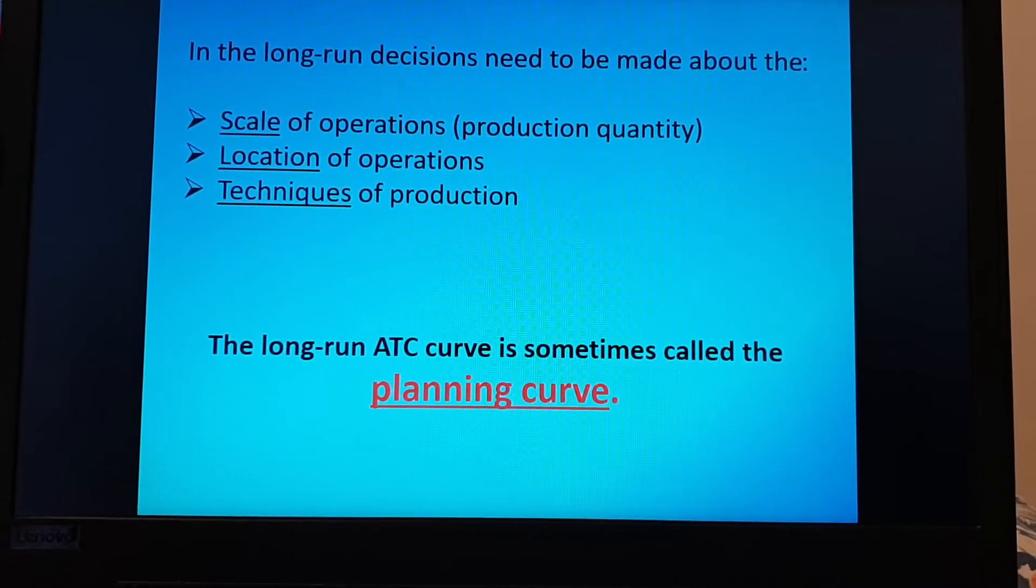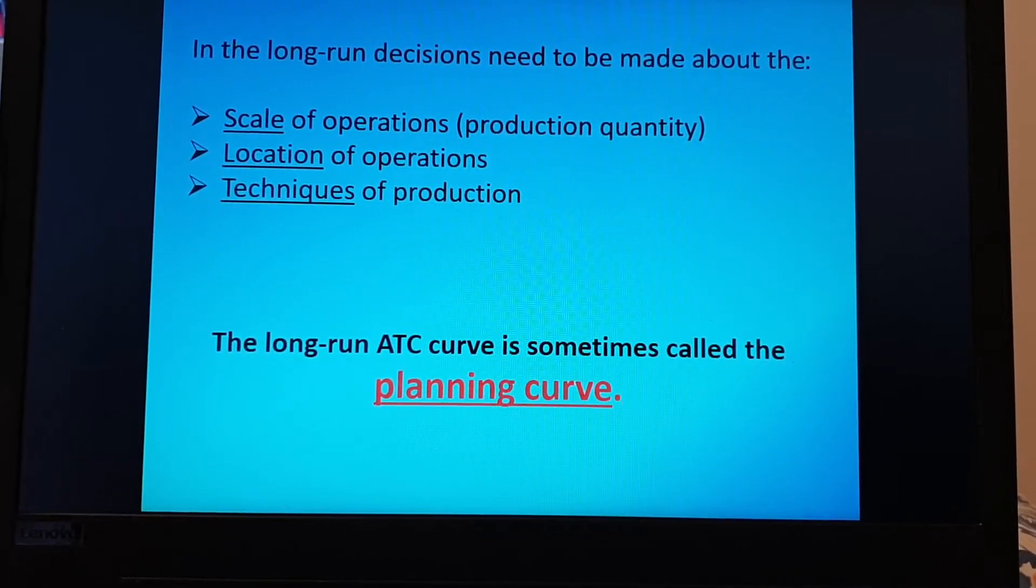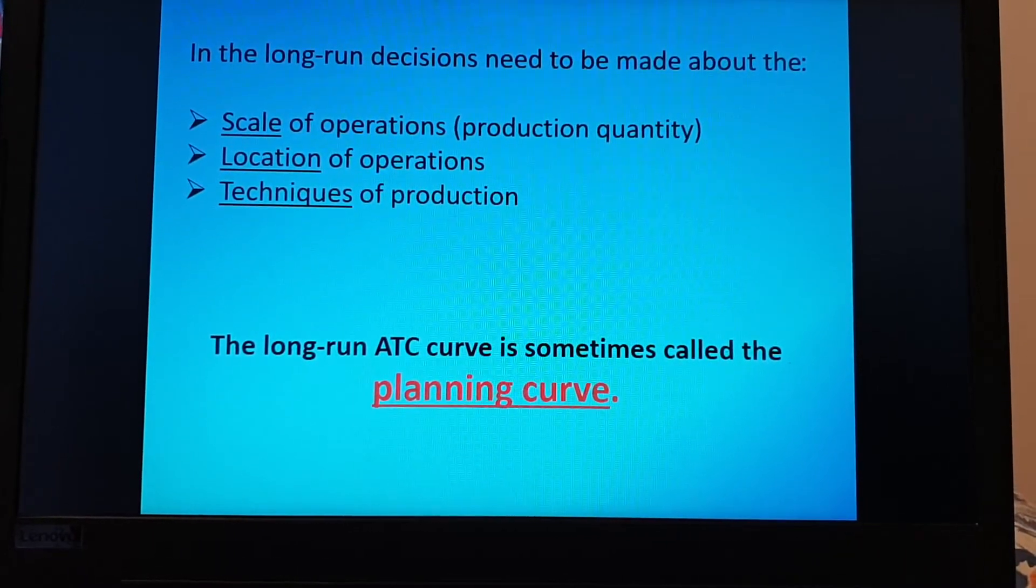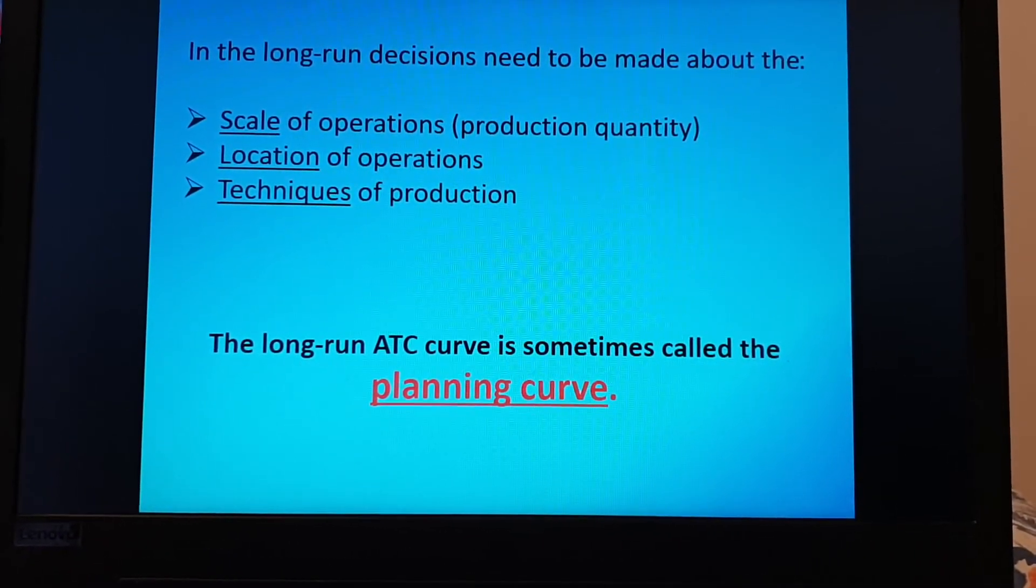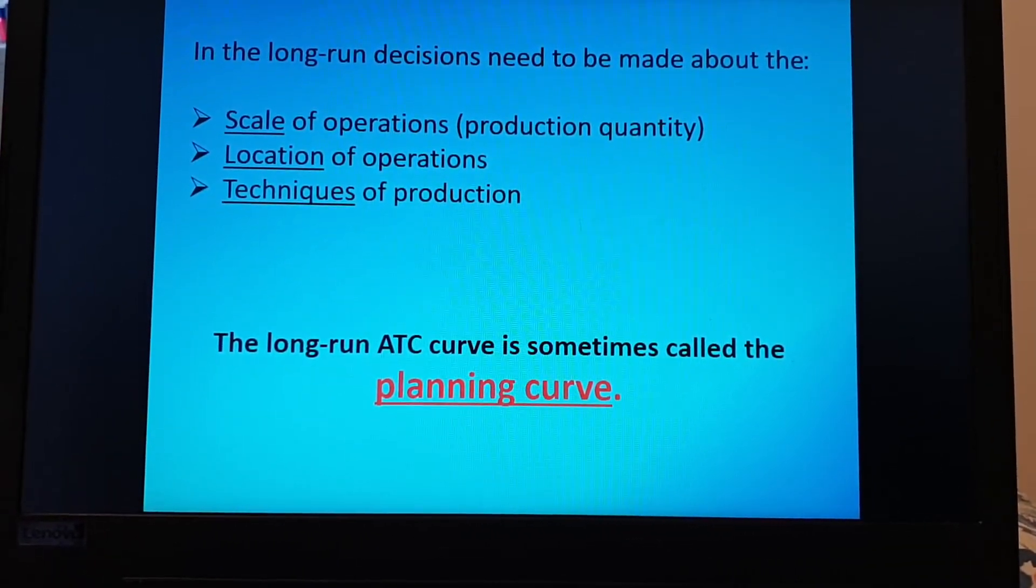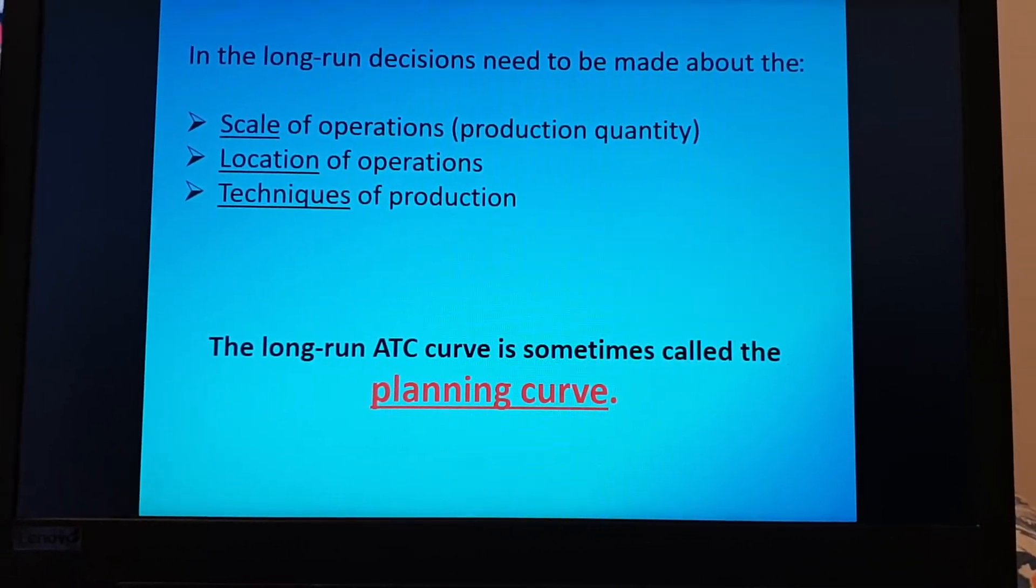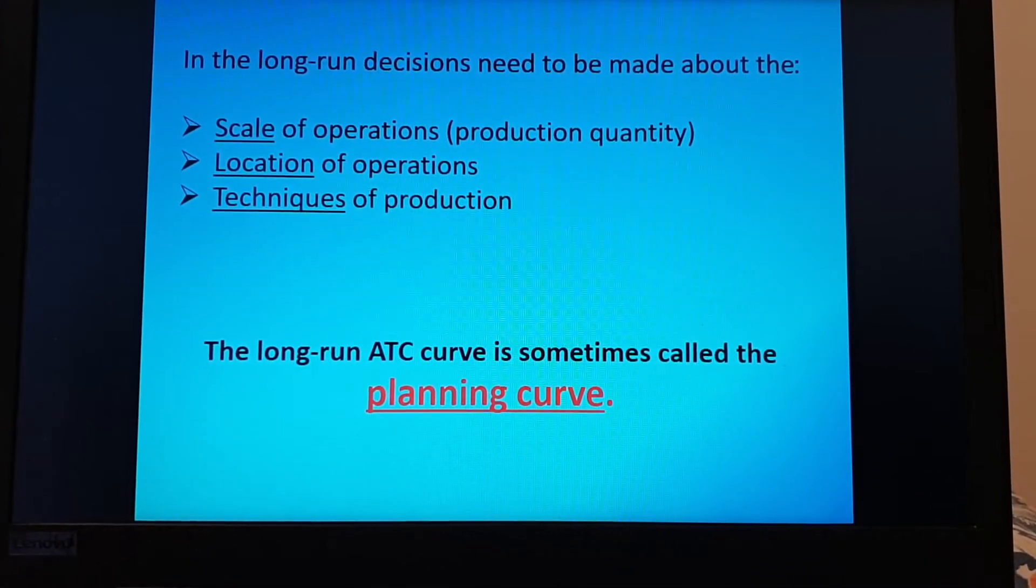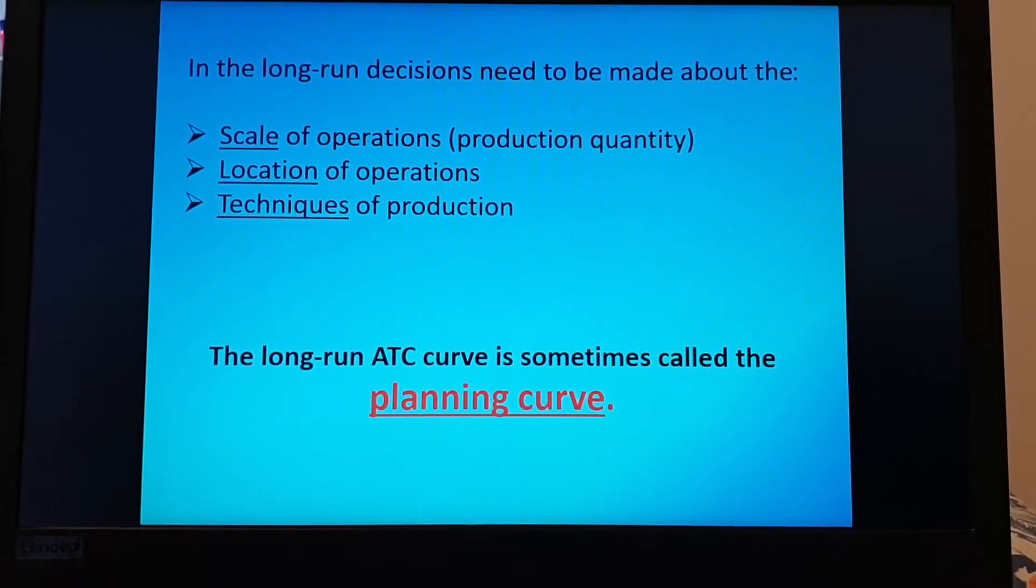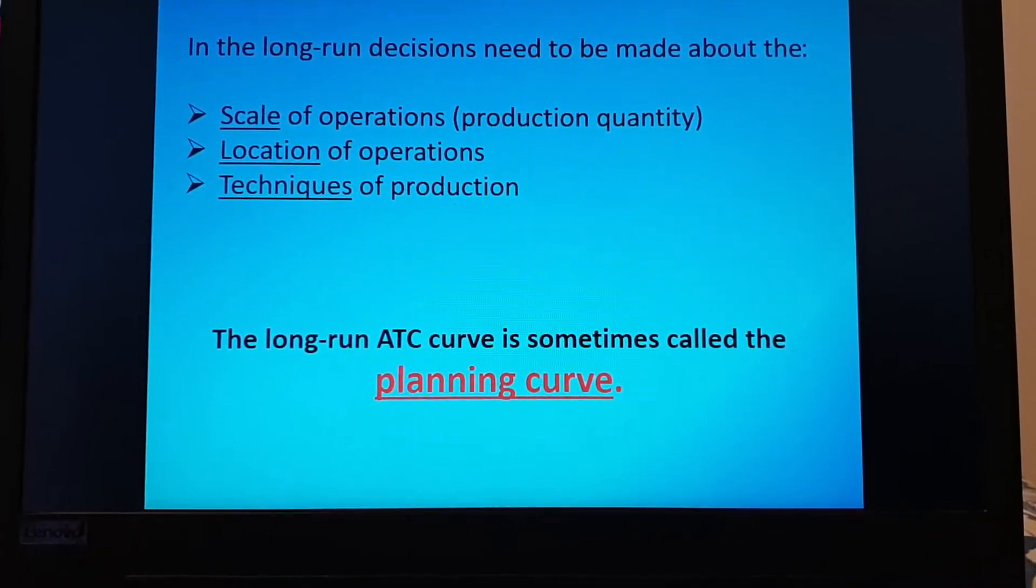For example we can say name any two long run decisions or decisions that need to be made in the long run. Then you need to know scale of operations, the production quantity, the location where it will take place and the techniques of production. Meaning what techniques am I going to use, machinery, human made production, etc.